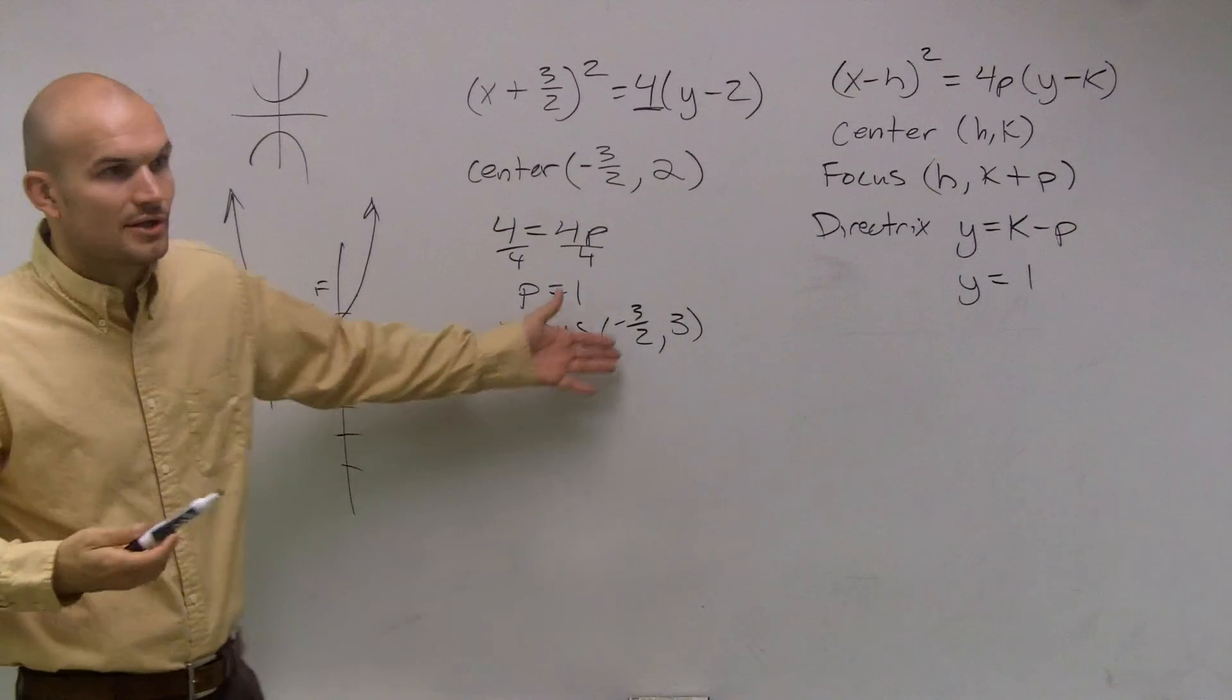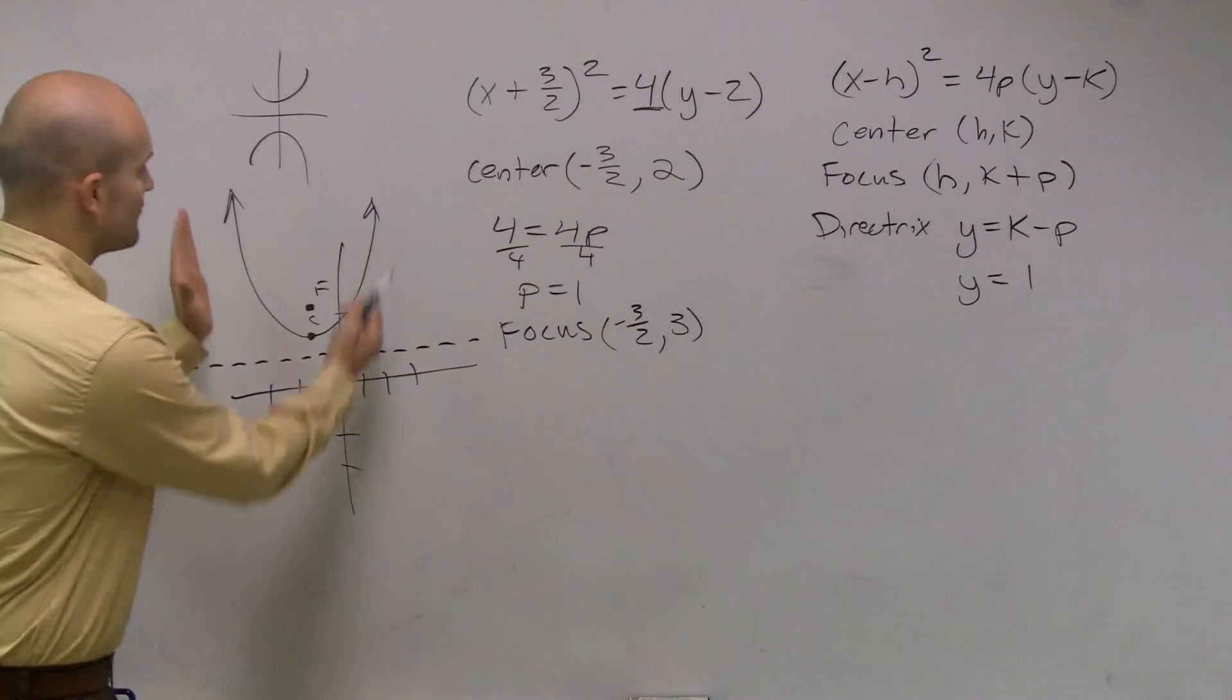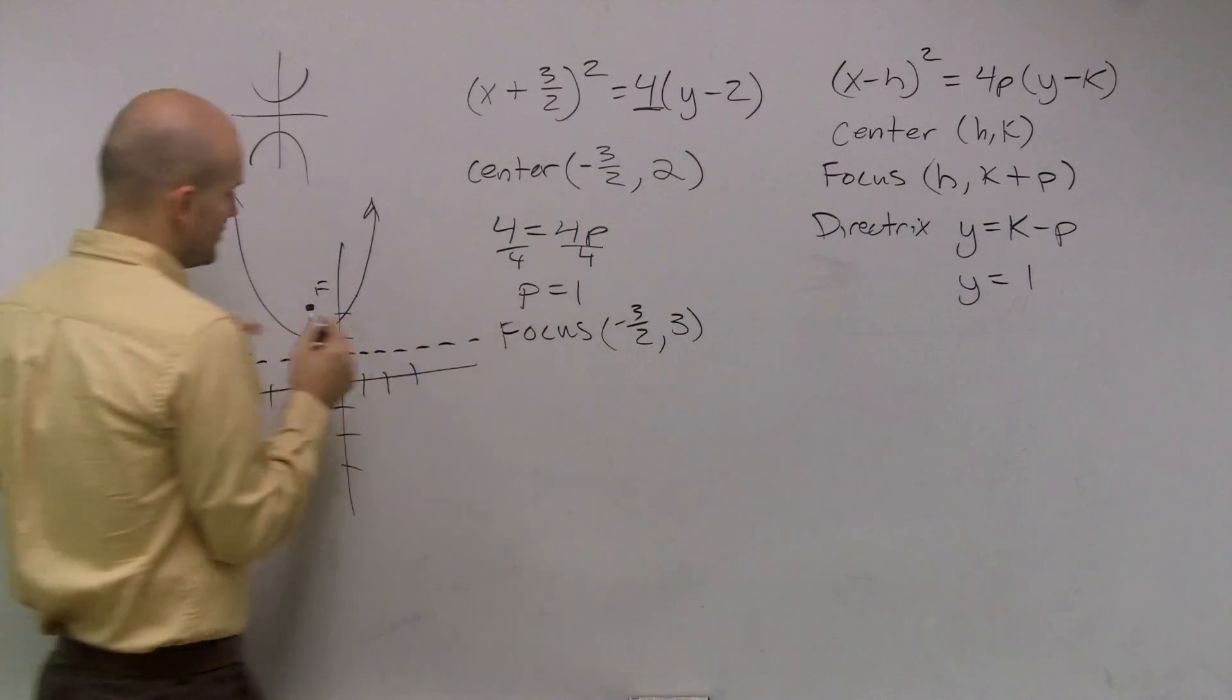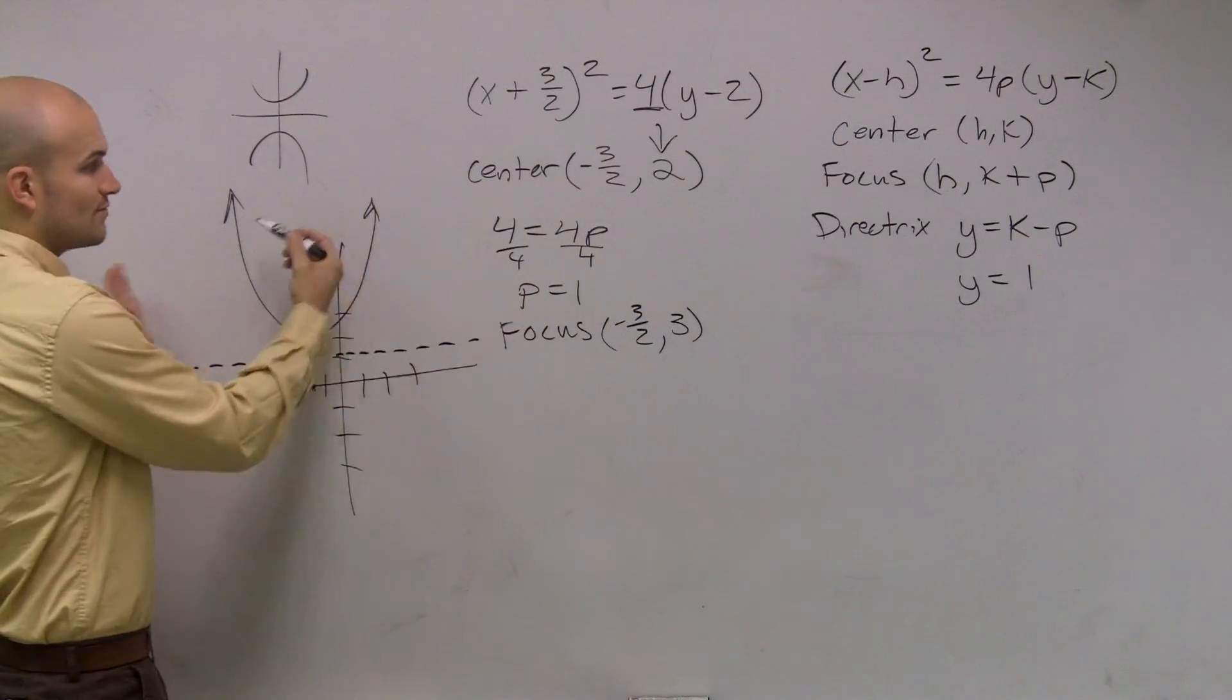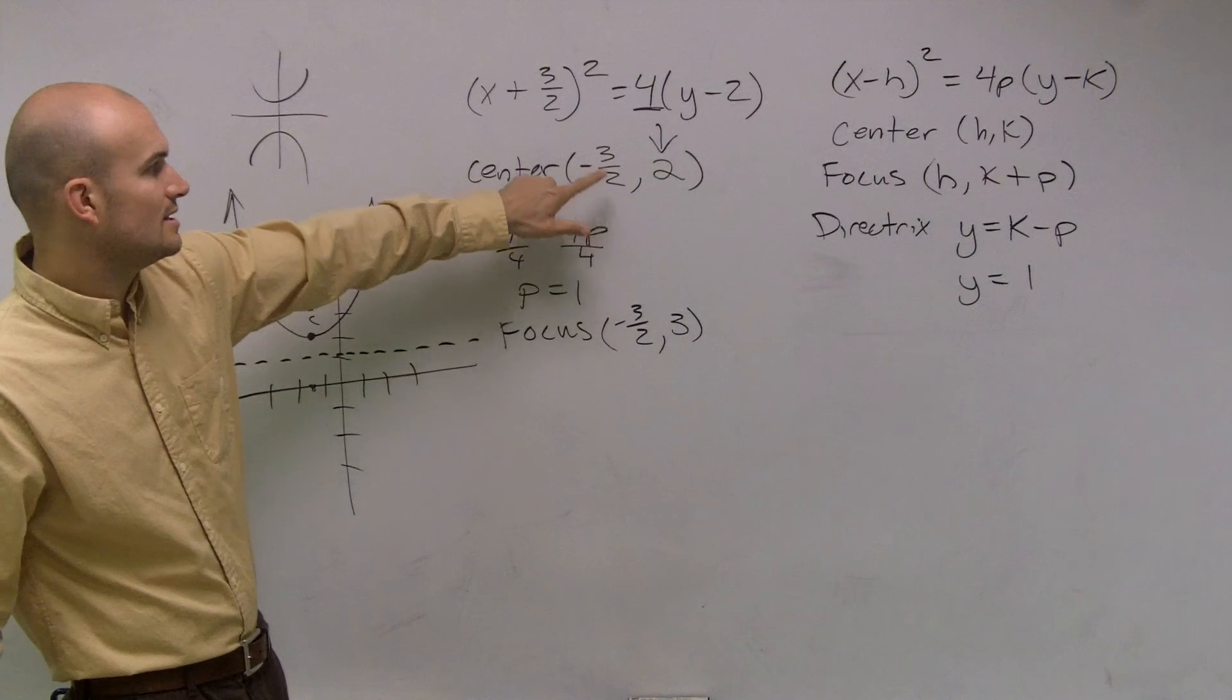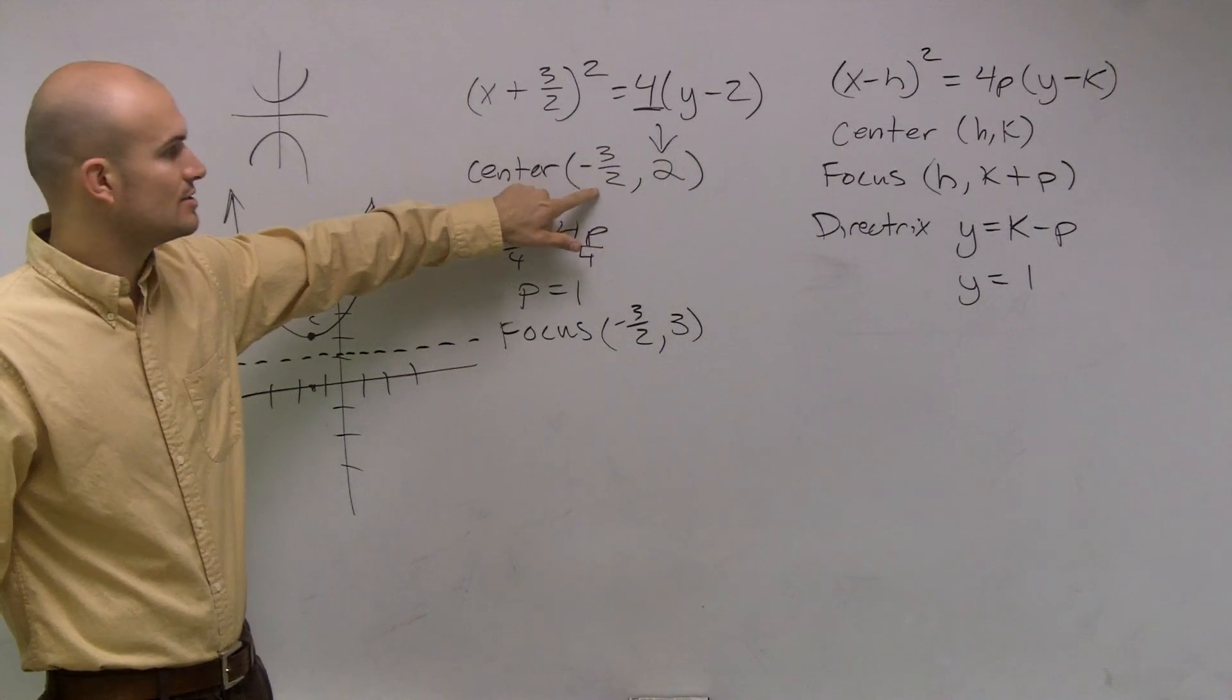So in this problem, this little fraction we were worried about, it's not really affecting it because since it's a vertical axis of symmetry, to find the focus and the directrix, we're only dealing with our k value. But if this was a horizontal axis of symmetry, then we'd be adding and subtracting our p value to our h.